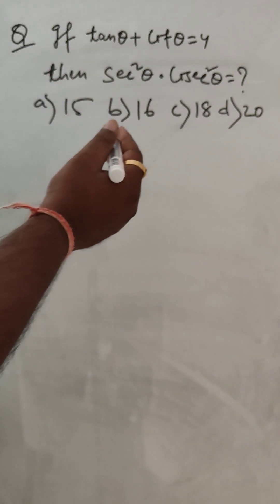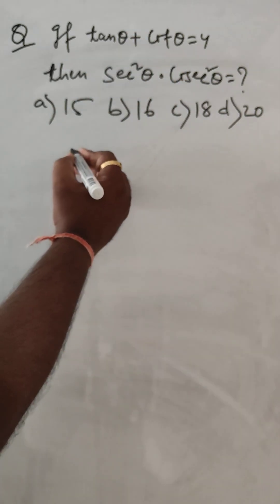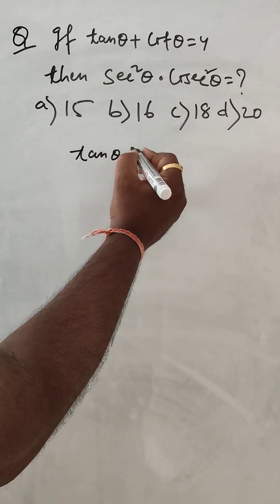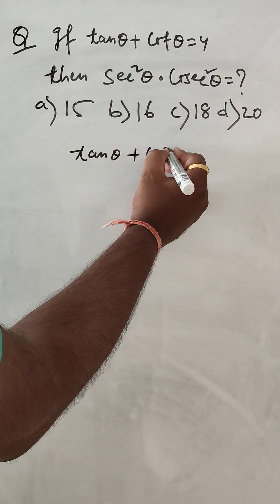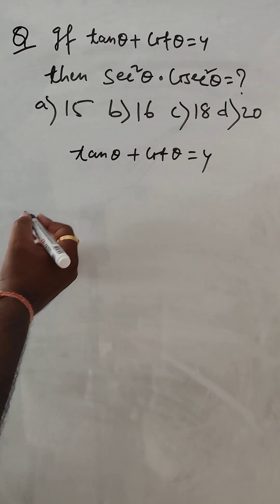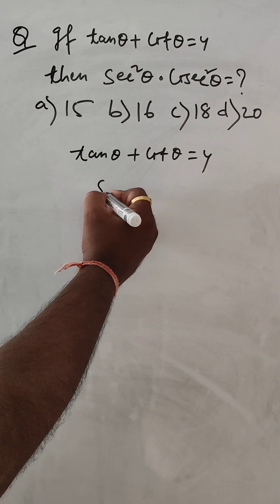If we know the formula it can be done very fast. Tan theta plus cot theta is equal to 4. So we know the formula: if tan theta into cot theta, then we can say it is equal to sec theta into cosec theta.